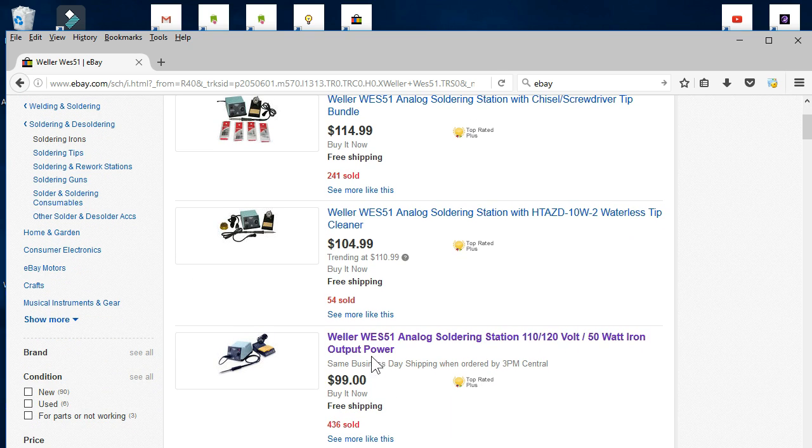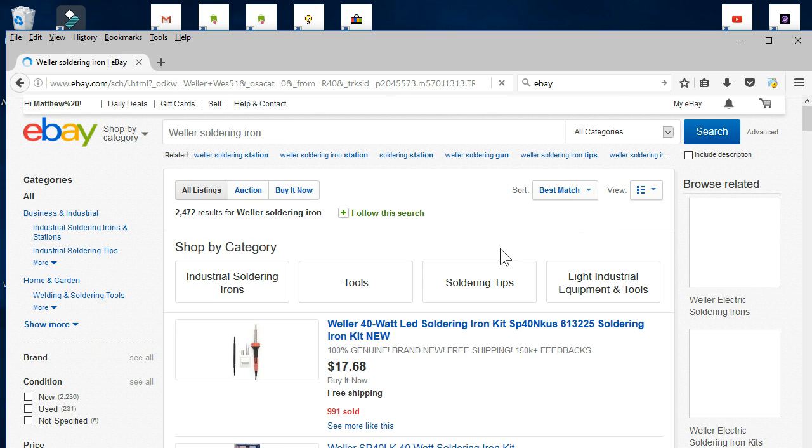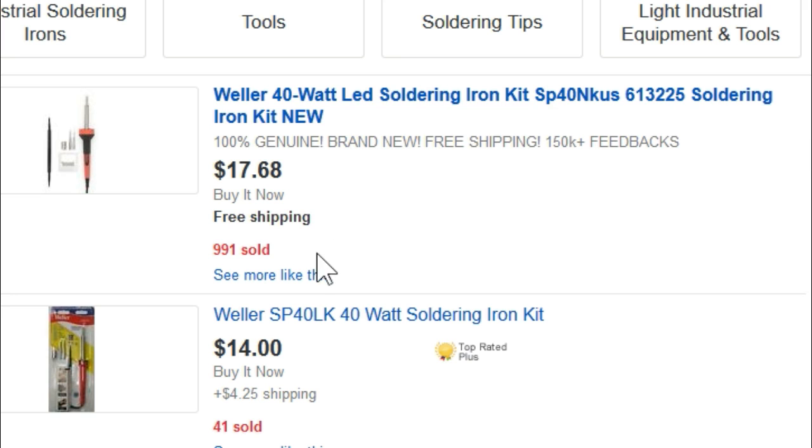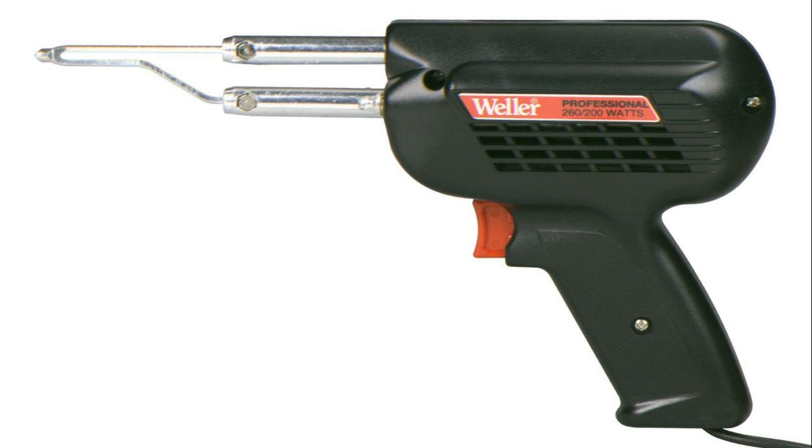If you're not ready to spend that much on a premium soldering station, you can still get a good soldering iron for around $20. I strongly recommend the Weller brand as a whole, except for the large gun-type irons. These are just too clunky for most flashlight-type modding.